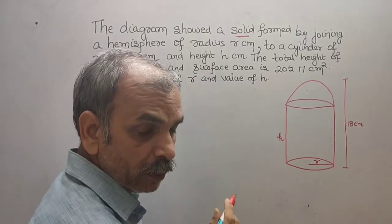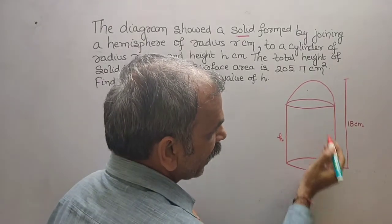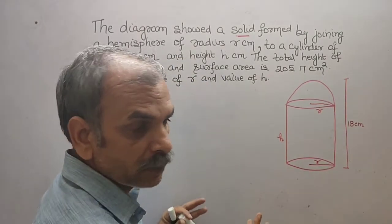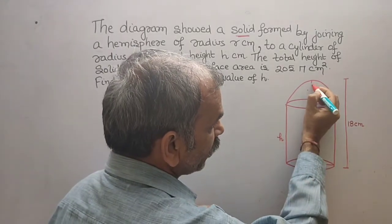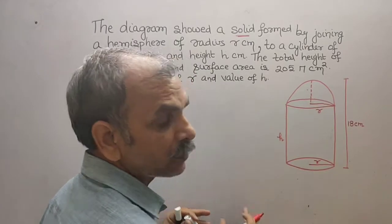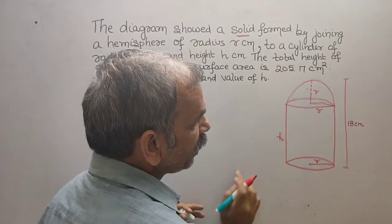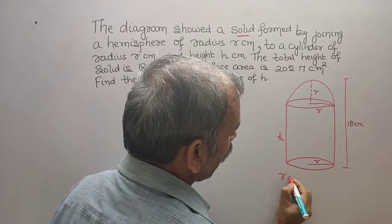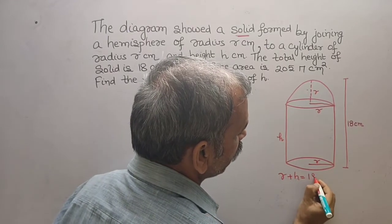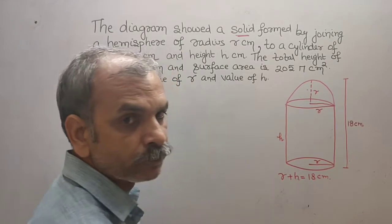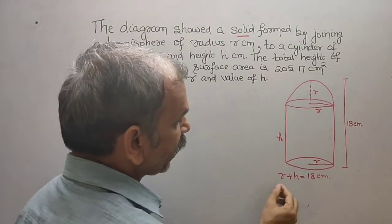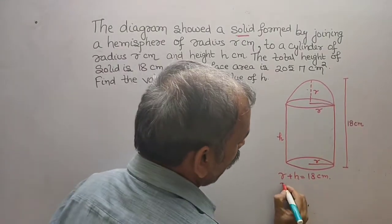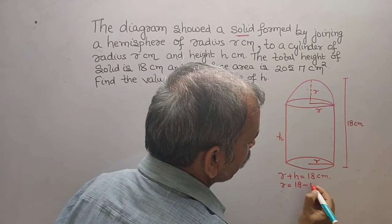As you can see, the radius r applies to both the hemisphere and the cylinder. The total height equals r plus h, so we can write r + h = 18 centimeters. From this, we get r = 18 − h.